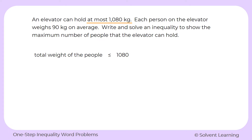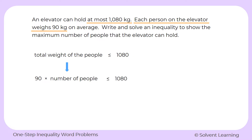We can write that as: the total weight of the people is less than or equal to 1,080. We also know that each person weighs 90 kilograms on average, so the total weight of the people will be 90 kilograms times however many people you have. We could write it as 90 times the number of people, and that total has to be equal to or less than 1,080. Now we actually have an inequality set up.